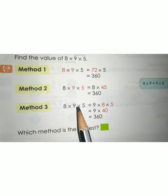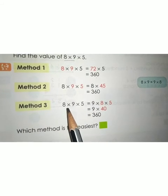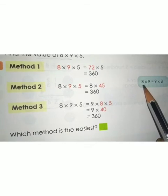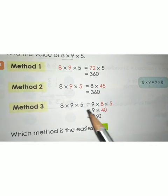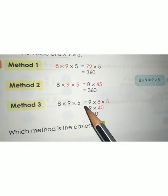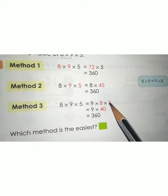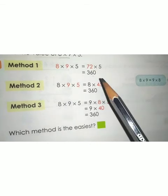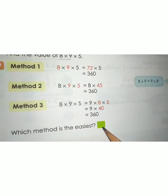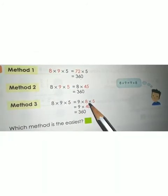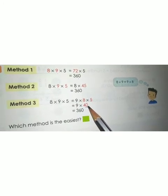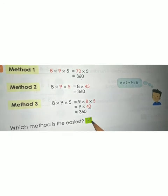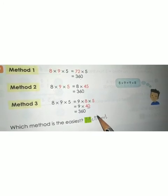In the third method for 8 × 9 × 5, you can rearrange the numbers. For example, 8 × 9 can be written as 9 × 8, giving 9 × 8 × 5. Now multiply 8 × 5 = 40 first, then 9 × 40 = 360. For me, method 3 is easier because if you get a 1's place value of 0, then the multiplication is very easy to finish.